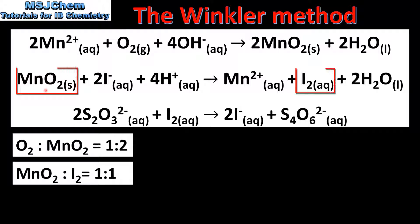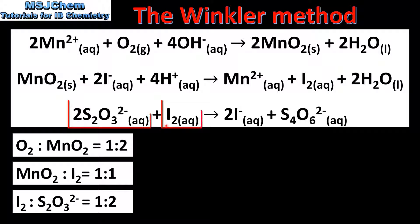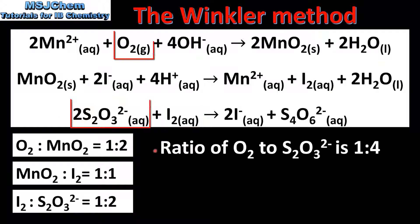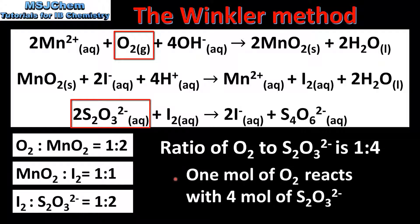In the second step, the ratio of MnO2 to I2 is 1 to 1. And in the third step, the ratio of I2 to the thiosulfate ion is 1 to 2. From this we can determine that the ratio of oxygen to the thiosulfate ion is 1 to 4, meaning that 1 mole of oxygen reacts with 4 moles of thiosulfate ions.